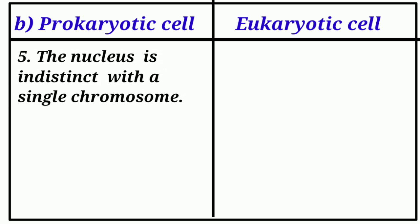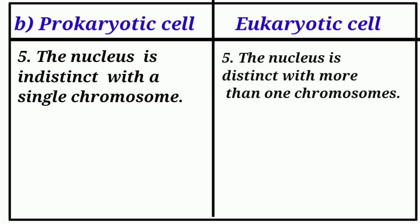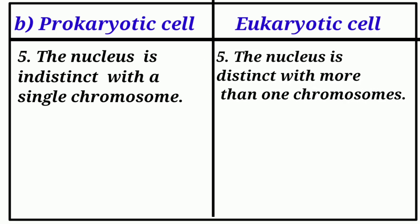Prokaryotic cell: The nucleus is indistinct with a single chromosome. Eukaryotic cell: The nucleus is distinct with more than 1 chromosome.